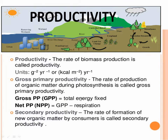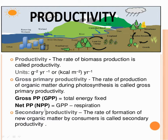Net primary productivity — apart from photosynthesis, one more important process continuously going on in an ecosystem is respiration, and respiration requires energy. So total energy fixed is gross primary productivity, and gross primary productivity minus respiration is your net primary productivity, or NPP. GPP stands for gross primary productivity and NPP stands for net primary productivity.